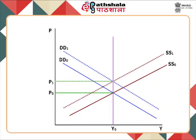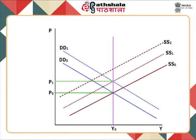Once again, there is an expectation of inflation, so workers again demand higher wages. They succeed since the economy is already at full employment and the employer has no choice except to increase the wage rate. This increase shifts the aggregate supply curve from SS1 to SS2. Once again, there is redistribution of income benefiting workers, increasing aggregate demand, and shifting the new demand curve to DD2. Equilibrium is again established at original output Y0 but at an even higher price level P2.